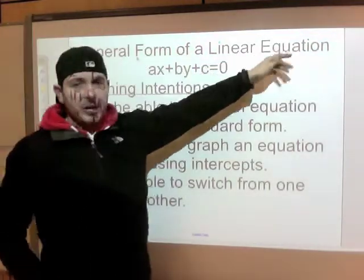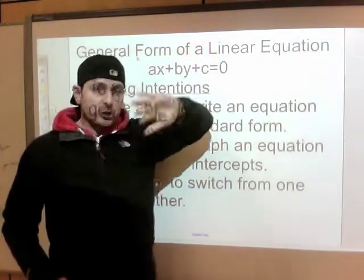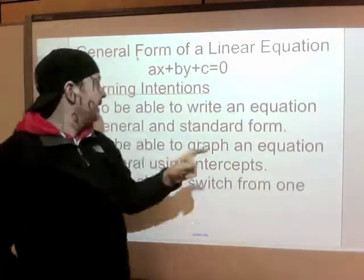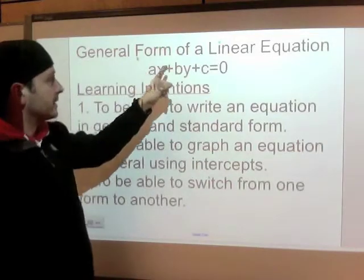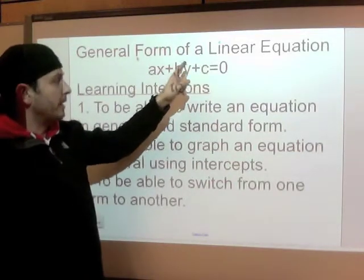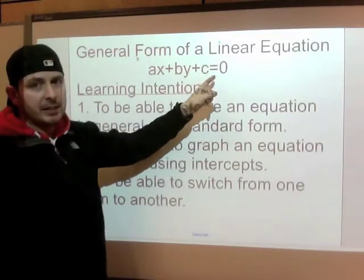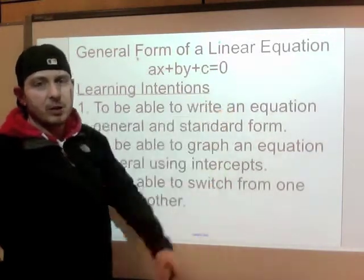General form of a linear equation — linear equation means straight line. Here it is: AX plus BY plus C equals zero.